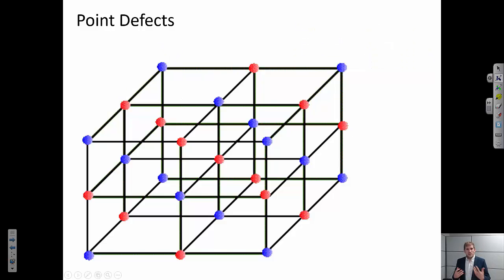Now there's another way that we can maintain charge balance and that's instead of removing a positive and removing a negative species, we could remove a positive species but then put it somewhere else in the lattice.